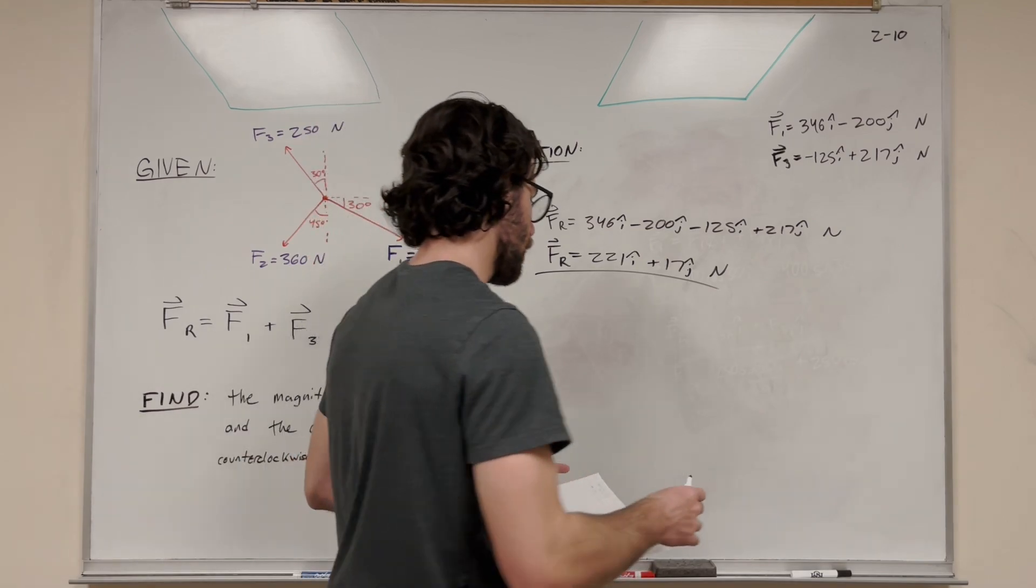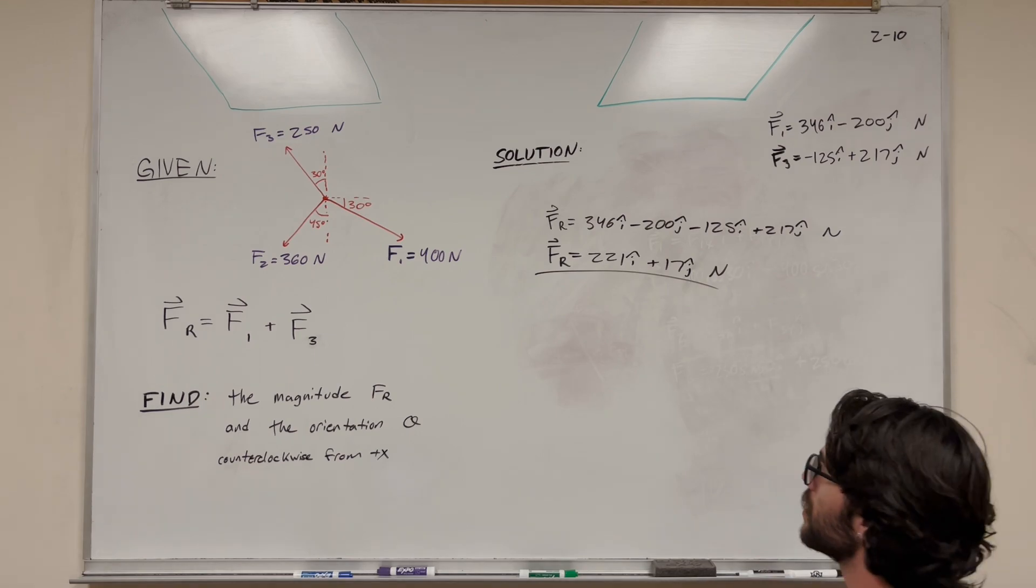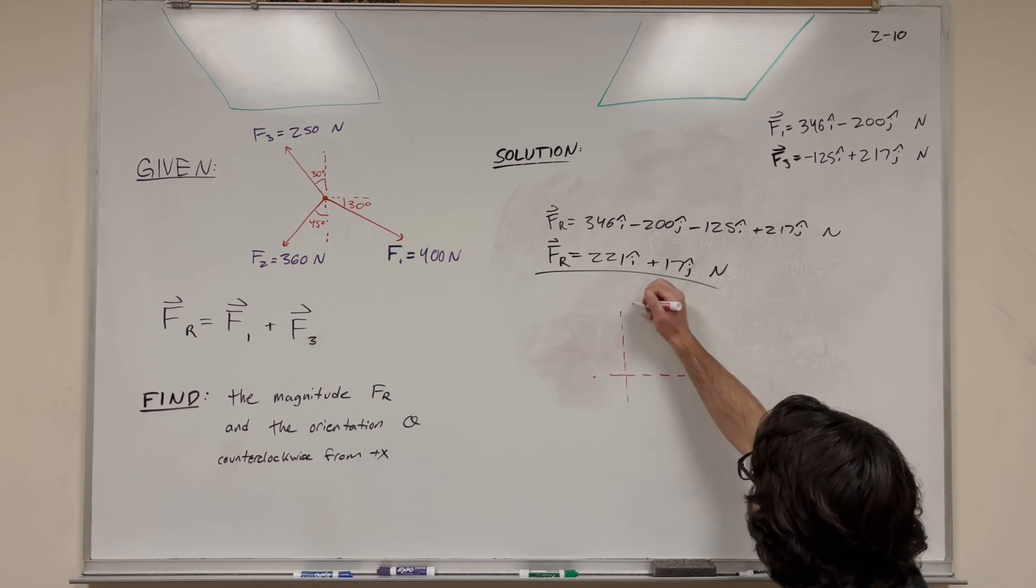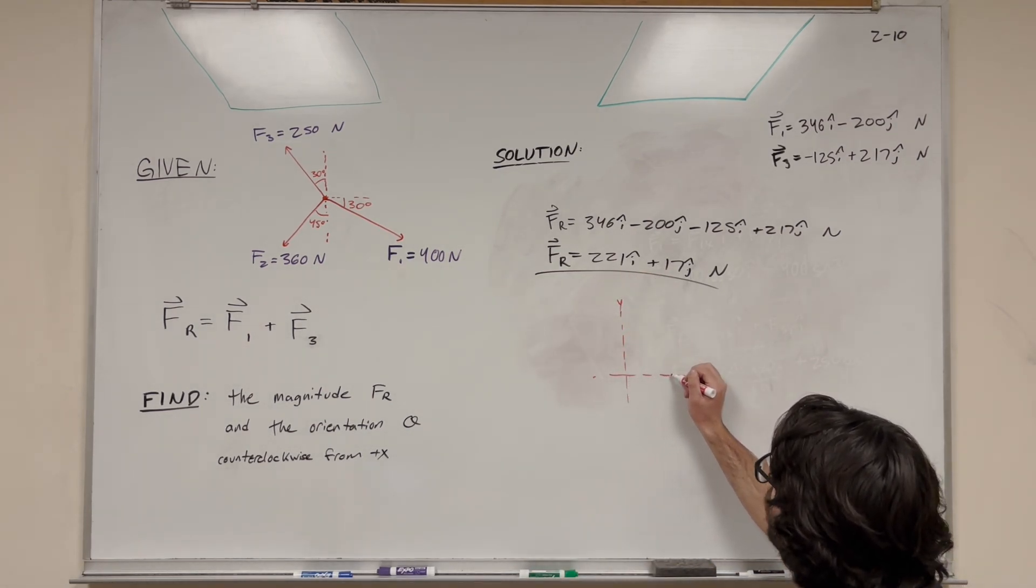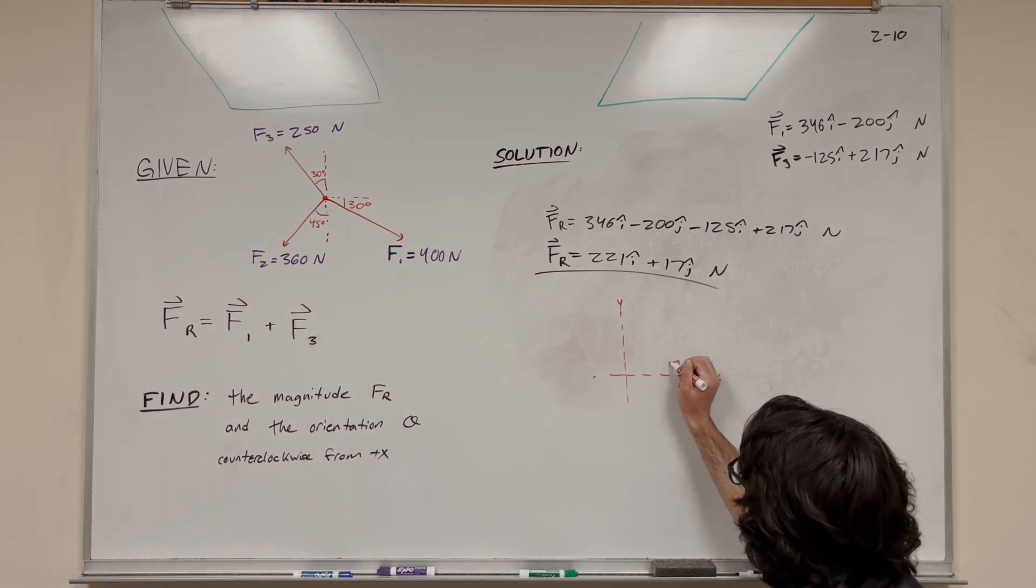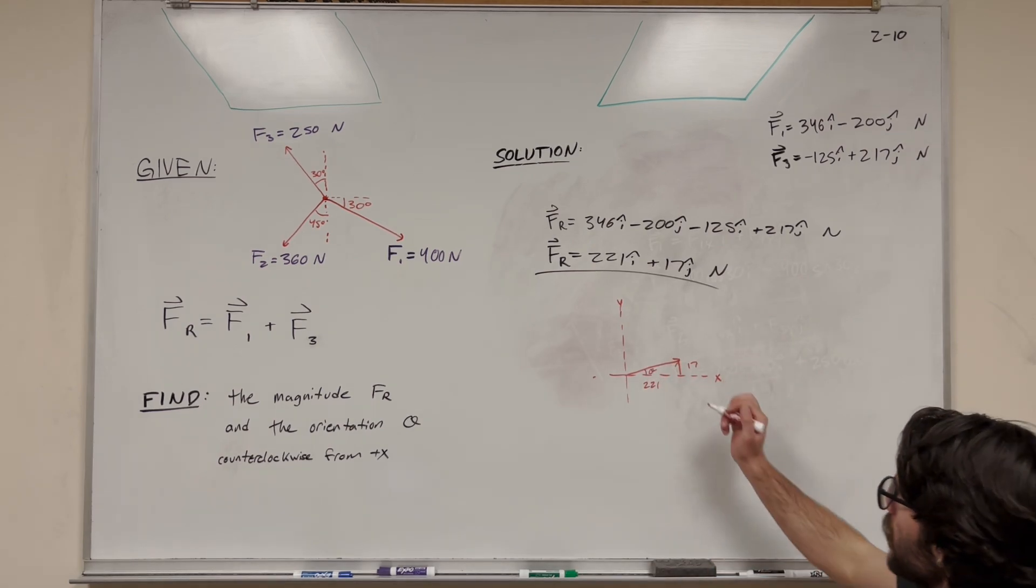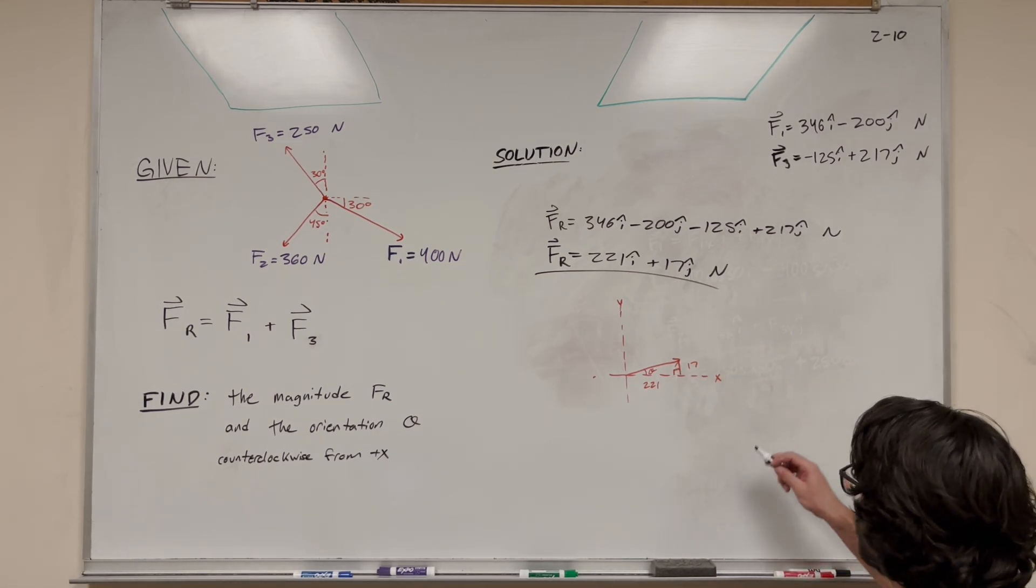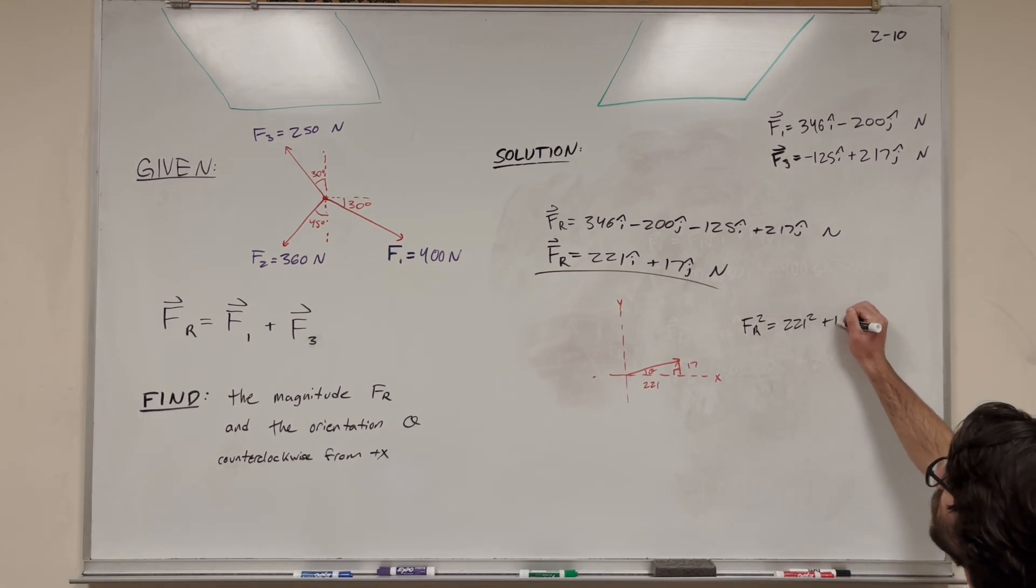Now we want to find the magnitude. We can think about this vector as a triangle. Here are our axes - the x-axis and y-axis. Our x is 221 and our y is 17. So this is our triangle, where this is 221 on the x and 17 on the y. We want to find the magnitude of this triangle. We know it's a right triangle, so we can use a-squared plus b-squared equals c-squared, the Pythagorean theorem.